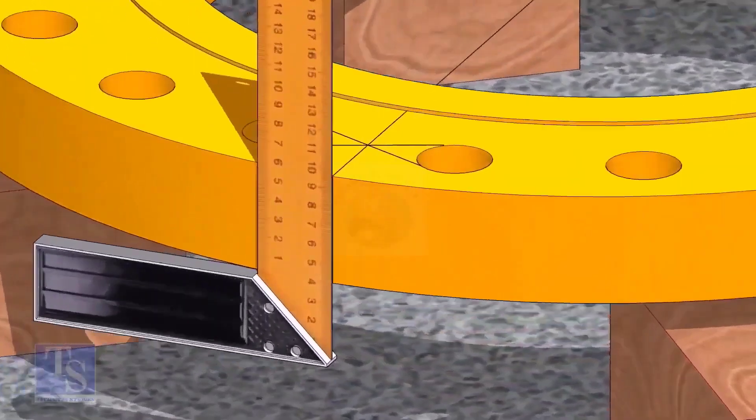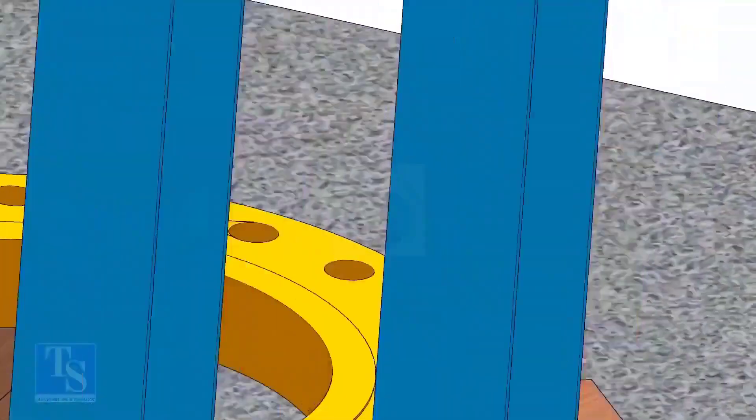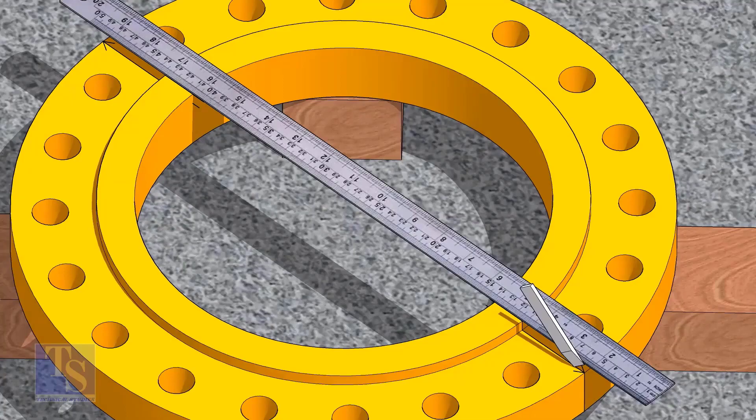Now, transfer the center line to the sides of the flange. Overturn the flange and transfer the center line on the back side of the flange.